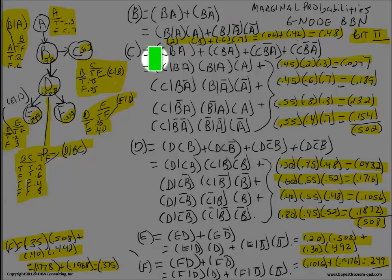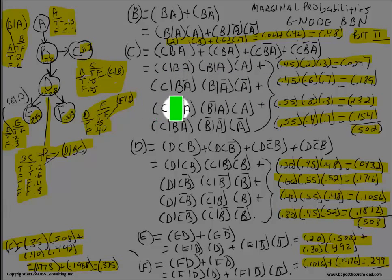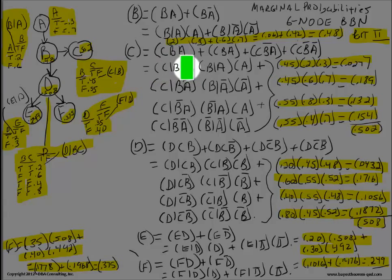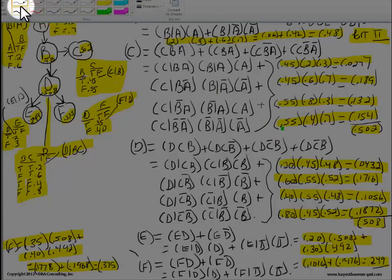For the probability of C, the marginal probability expands as: P(C,B,A) + P(C,B,not-A) + P(C,not-B,A) + P(C,not-B,not-A). I just wrote these down consecutively. Using the chain rule, since C's conditional probability stops at B and doesn't depend on A directly, we can cross the A's out of the C given B term.